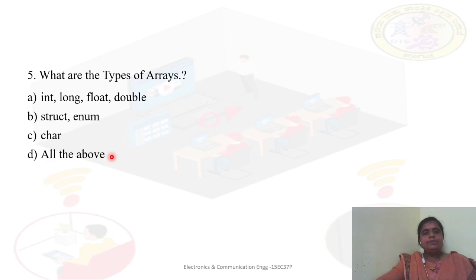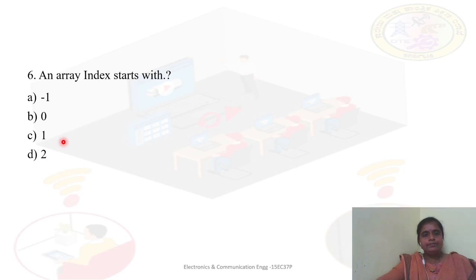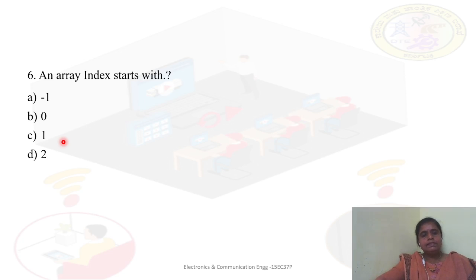What are the types of arrays? You can declare the data type as int, long, float, double, struct, enum, and also character. All data types can be used for arrays, so all of the above is the right answer. Next: an array index starts with what — minus one, zero, one, or two? It starts with zero, so B is correct.